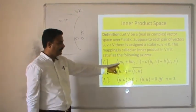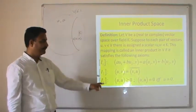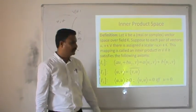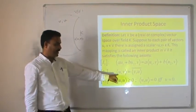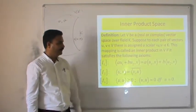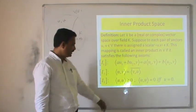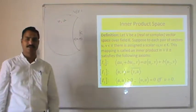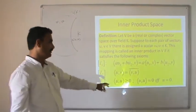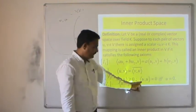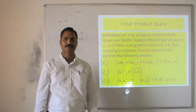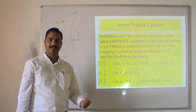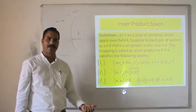Property i1: inner product of (au1 + bu2, v) = a·⟨u1, v⟩ + b·⟨u2, v⟩. Property i2: ⟨u, v⟩ = conjugate of ⟨v, u⟩. Property i3: ⟨u, u⟩ ≥ 0, and particularly ⟨u, u⟩ = 0 if and only if u = 0. Meaning if the inner product of some vector with itself is 0, then the vector itself is 0.